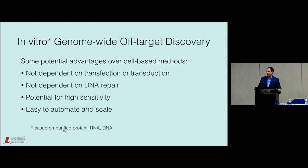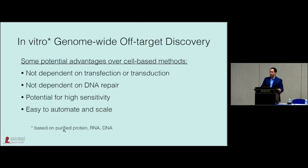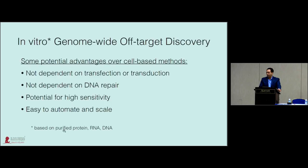That motivated us to think about in vitro genome-wide off-target discovery methods, based on purified protein, RNA, and DNA. Potential advantages include: not dependent on transfection or transduction of cells; not dependent on DNA repair, enabling more precise mapping of nuclease-induced breaks; potential for really high sensitivity by increasing the protein-to-DNA ratio; and it's potentially very easy to automate and scale.